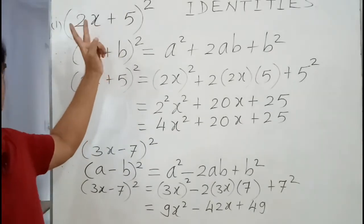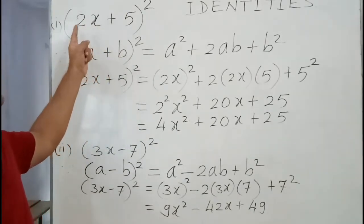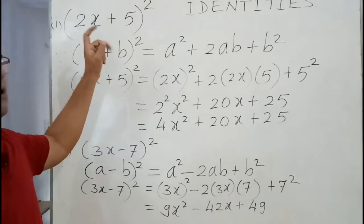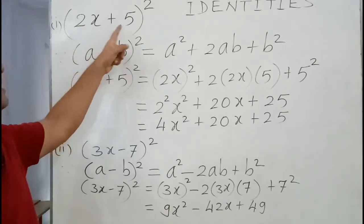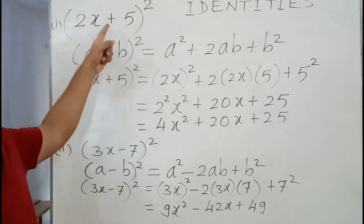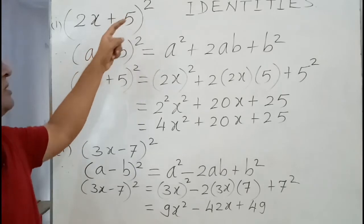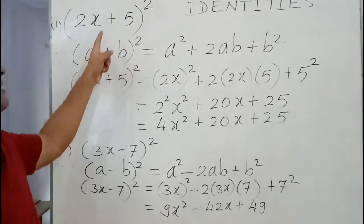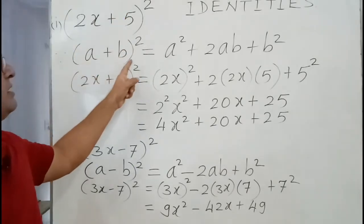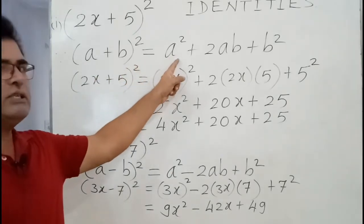So first you observe and see the sum carefully which identity we can apply. We can apply (a+b)² because it contains two terms and power is 2. So we have identity and plus sign is there.